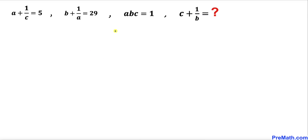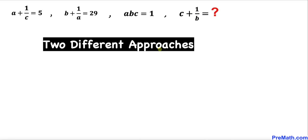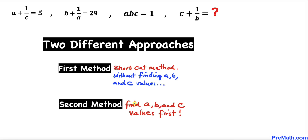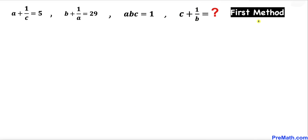Let's get started with the solution. In this video I am going to share two different approaches. In our first method we are going to use the direct approach — that means we are not going to find the values of a, b, or c. In the second method we are going to find the values of a, b, and c first, and then calculate c plus 1 over b.